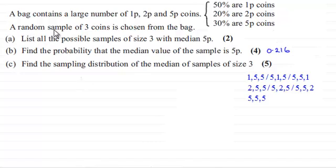A random sample of three coins is chosen from the bag. In part A, we listed all the possible samples of size 3 with median 5p. This was our selection of samples of size 3 with a median of 5p. In part B, we found the probability that the median value of the sample is 5p, and we found it was 0.216.